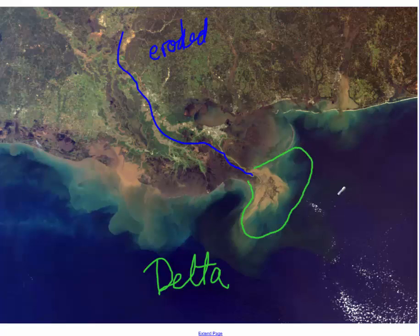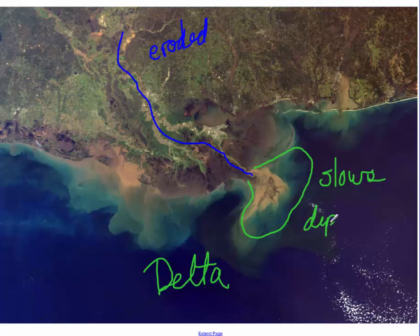A delta is a very important ecological area — it's where we get all of our great food. The shrimp and the crawfish that we love come from this really nutrient-rich area. A delta forms at the end of a long river because the water slows and you have deposition. The smaller the particle, the further out it might go before being deposited, while the bigger sediments drop out right close to the end of the river.